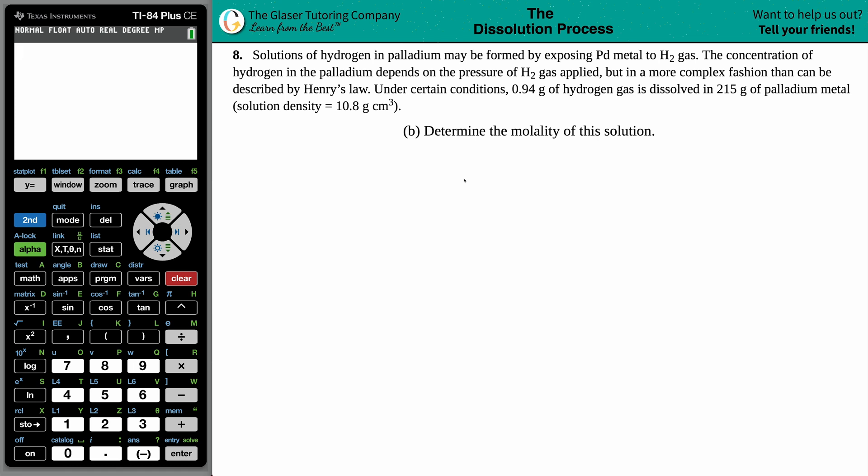Problem 8: Solutions of hydrogen in palladium may be formed by exposing Pd metal to H2 gas. The concentration depends on the pressure of H2 gas applied, but in a more complex fashion than can be described by Henry's law. Under certain conditions, 0.94 grams of hydrogen gas is dissolved in 215 grams of palladium metal, with solution density of 10.8 grams per centimeters cubed. We have to determine the molality of the solution.